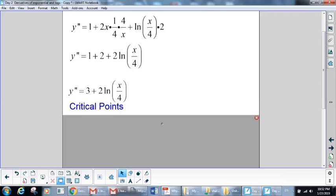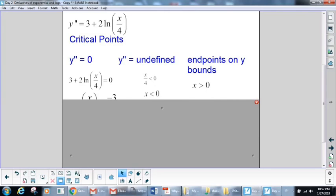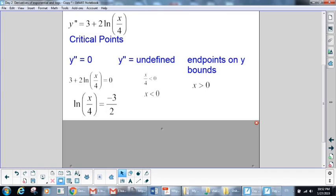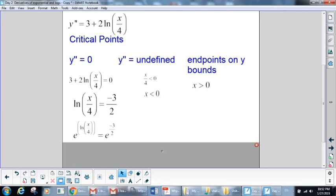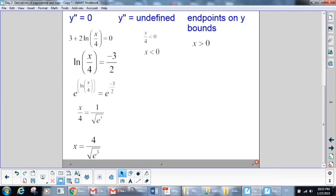We want to find our critical points. Once again, we want to see where our second derivative is equal to 0, undefined, or has endpoints. We know that we're undefined where x over 4 is less than 0. And then we want to solve for 0 here. We set our derivative equal to 0. We subtract our 3 and divide by 2. And we exponentiate once again. And this tells us that x would be equal to 4 over the square root of e to the third.